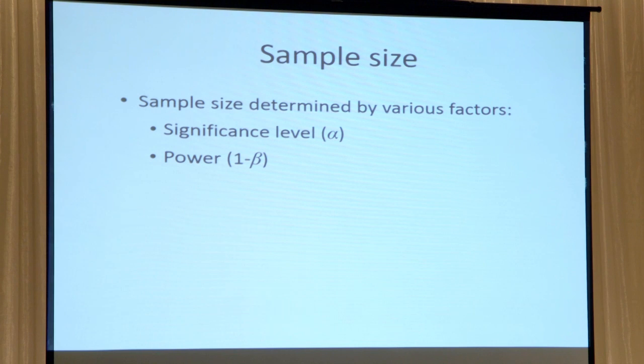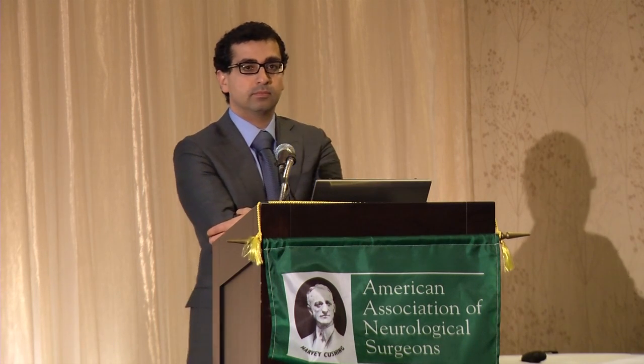Michael, how is power related to sample size? If you have a power of 80% versus a power of 95%, would that increase or decrease the number needed? Power is 1 minus beta. So if you're increasing the power of your study, you would typically need more patients to achieve that higher power.